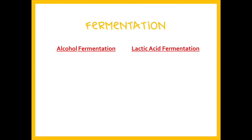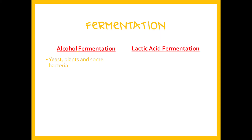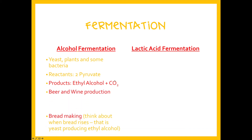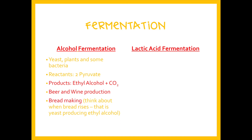Now, if we finish glycolysis and there is no oxygen present, the cell will go through fermentation. The first type is alcohol fermentation — yeast, plants, and some bacteria do this. Starting from two pyruvates right after glycolysis, the end products are ethyl alcohol and carbon dioxide. This is how beer, wine, and bread are produced. When bread rises, that is yeast activating inside and producing ethyl alcohol which makes the bread rise, and when the bread is baked that alcohol is burned off.